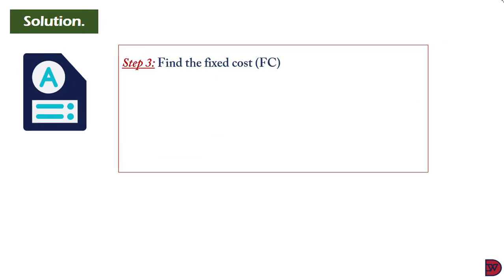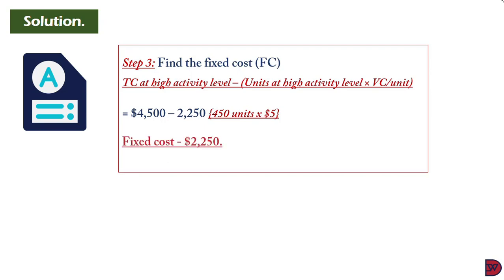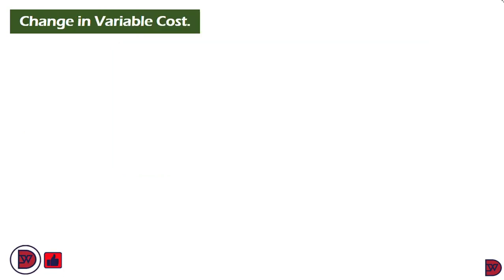Now we find the fixed cost. Fixed cost equals the total cost at the highest activity level less the total variable cost. Total cost at the highest level is $4,500. Total variable cost is 450 units × $5 = $2,250. Therefore, fixed cost = $4,500 − $2,250 = $2,250.